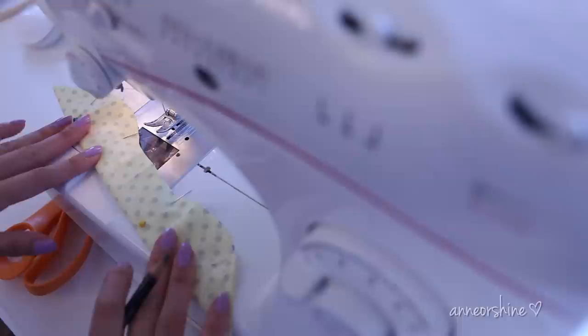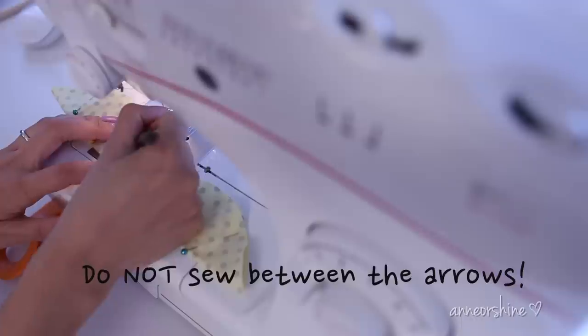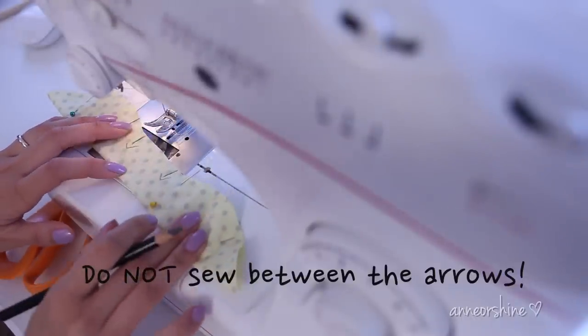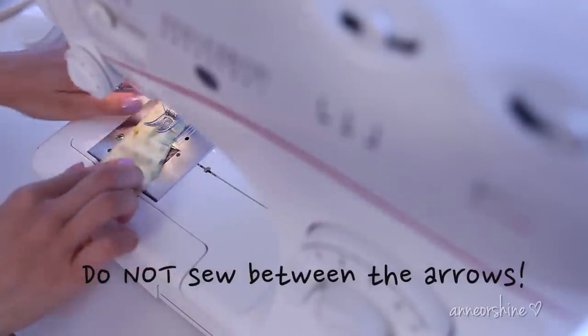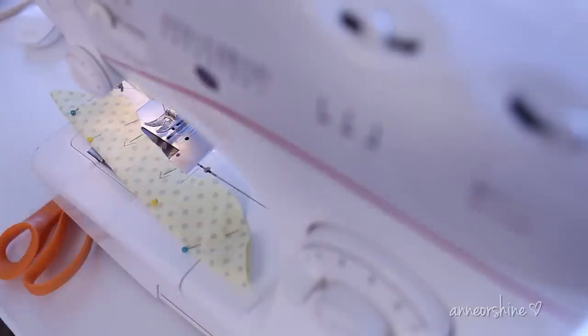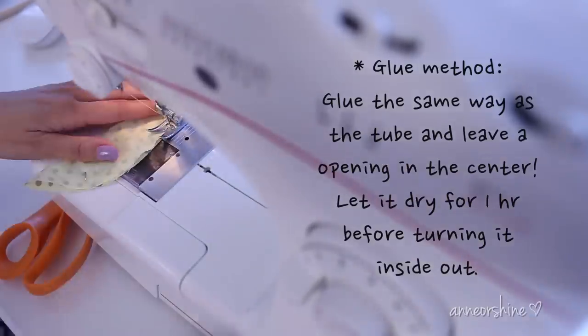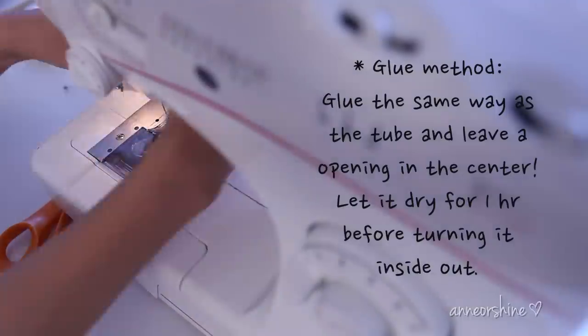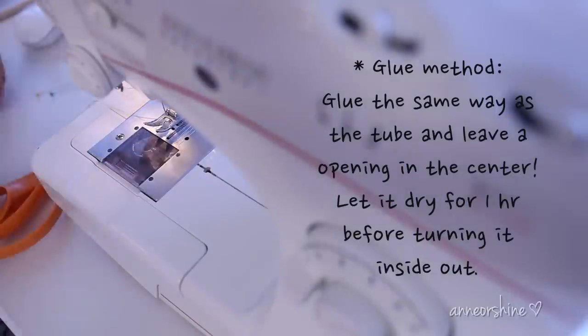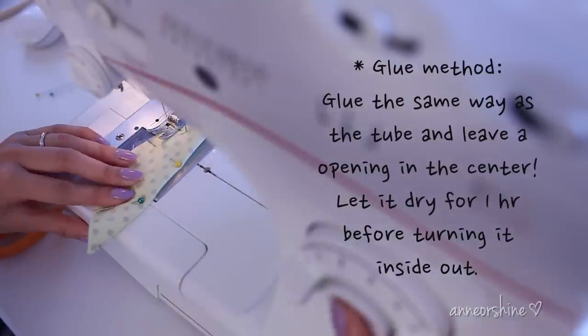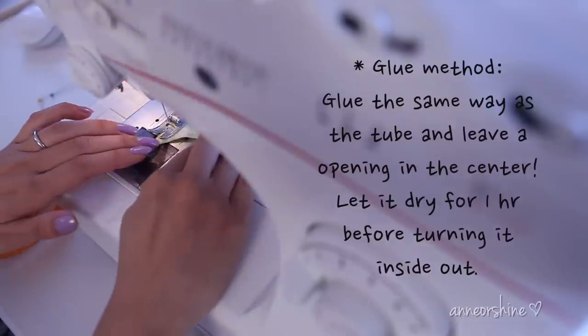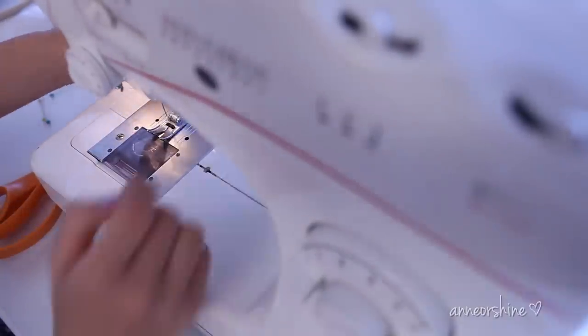Okay, so for the bow part, leave the center open because that's the part where you're going to turn it inside out. I'm marking where I will start sewing to give you guys an idea. So these two arrows that I marked right here are my starting points. After marking, go ahead and sew it from the starting point to the end. I prefer to sew a quarter inch seam allowance on both pieces. If you are gluing, then go ahead and do the same thing by gluing on the inside near the edge. And remember to leave the center open. Then let it dry for at least one hour before you turn it inside out.